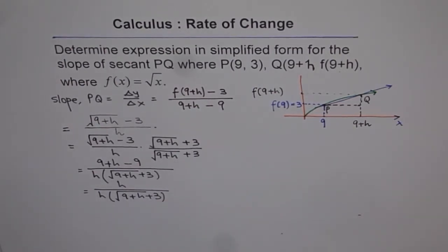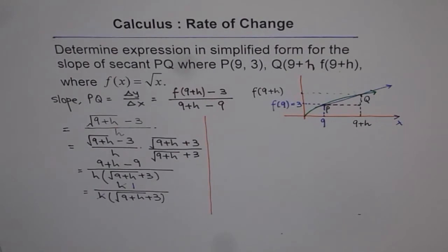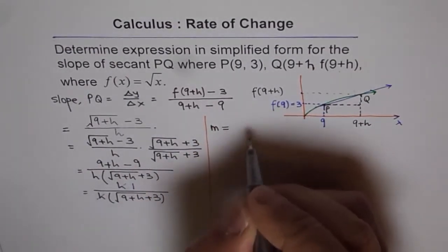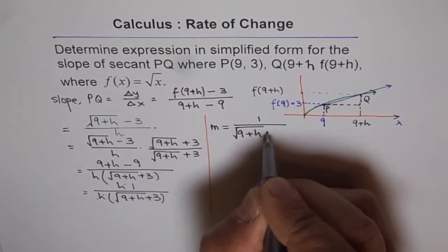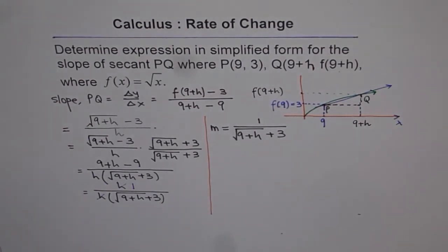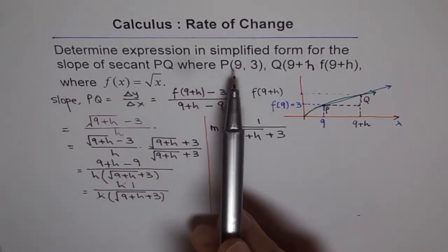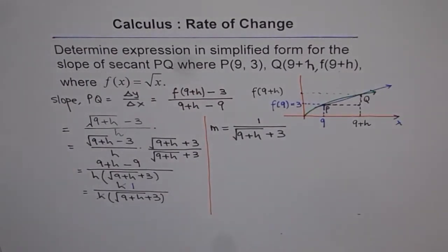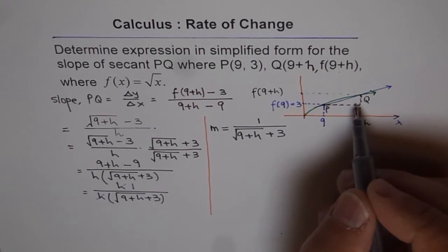After cancelling h, the slope of secant PQ in simplified form is m = 1 over (√(9+h) + 3). That is the answer for the first part of the question — the simplified expression for the slope of secant PQ, where P is (9, 3) and Q is (9+h, f(9+h)) on the function f(x) = √x.